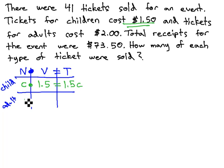Similarly, for the adults, we don't know the number of adults, but their value is $2. Multiplying, we get 2A for the total value of all the adults at the event.